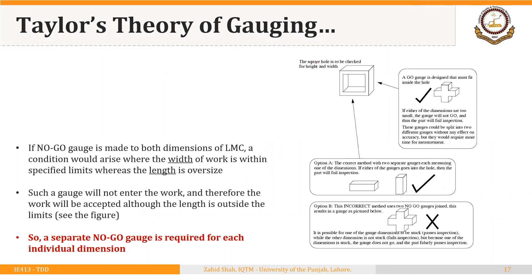For example, if we have to check a square hole that has a certain length and a certain width, this part has two features that have to be inspected. We can have a go gauge of the same square shape. This checks the maximum material condition, that is the lower limit of the hole. If either dimension is too small, the gauge will not go, and if the lower limit on either the length or the width is violated, this go gauge will not enter the hole and the part will fail inspection.